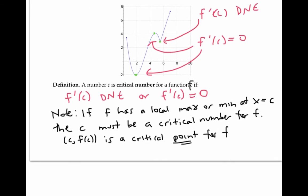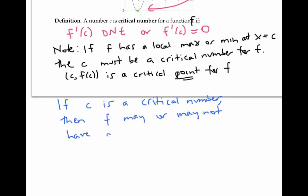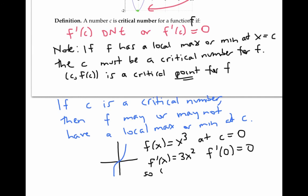It's important not to read too much into this statement. It says that if f has a local max or min at c, then c must be a critical number. But the converse doesn't hold — if c is a critical number, then f may or may not have a local max or min at c. One example to keep in mind is f of x equals x cubed at c equals zero. Since f prime of x is three x squared, we have f prime of zero equals zero, so zero is a critical number. But f does not have a local max or min at x equals zero.